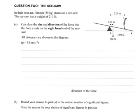So we're on question 2, the seesaw. In the next act, Hannah, 55kg, stands on a seesaw. The seesaw has a weight of 210 N. Calculate the size and direction of the force that the floor exerts on the right-hand end of the seesaw.